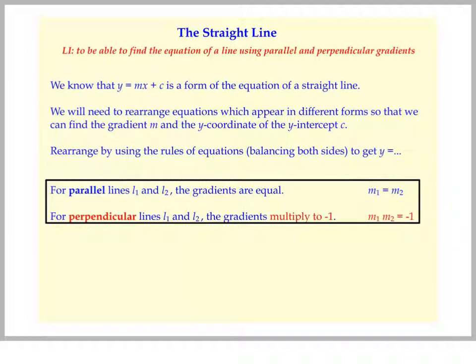However, this is new. For perpendicular lines, which is where two lines are separated by a right angle, the gradients will multiply to minus 1. So m1 times m2 equals minus 1.